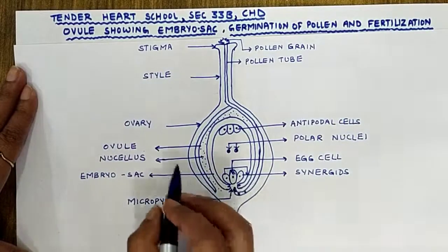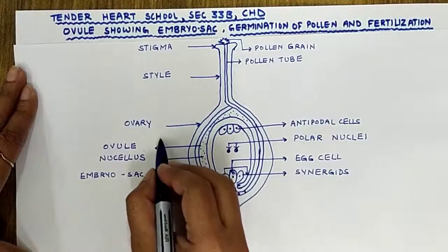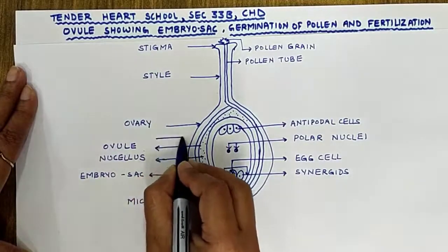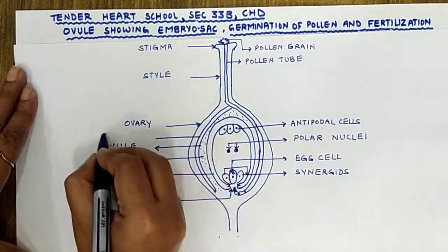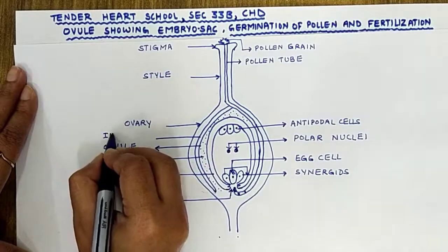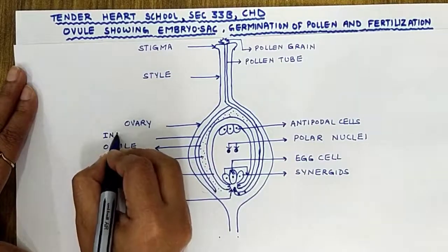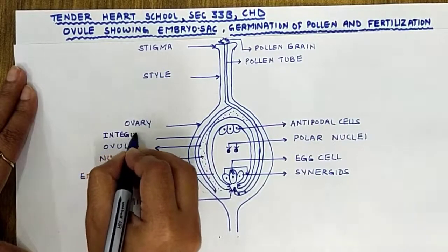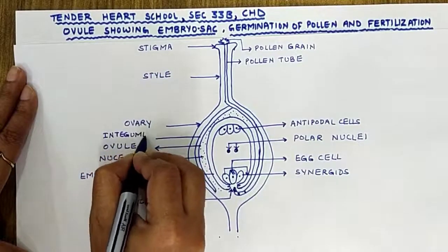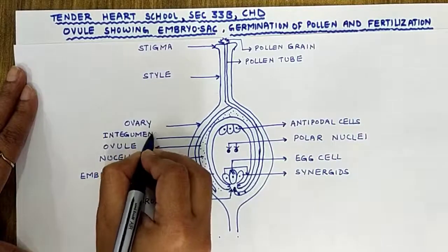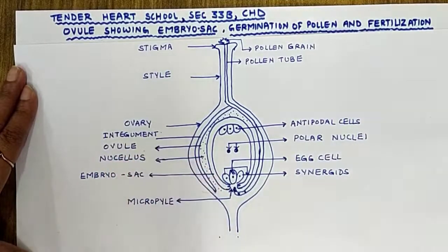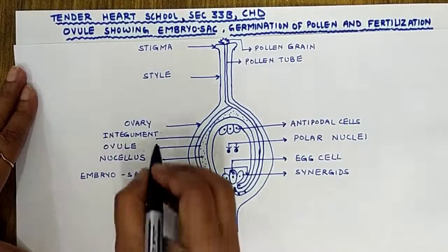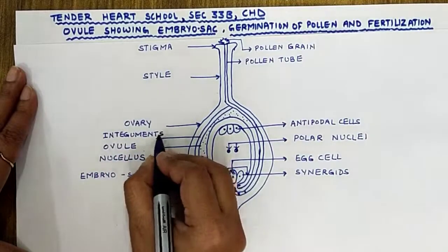The ovule is protected by integuments, which are the protective coverings of the ovule, giving protection to the ovule.